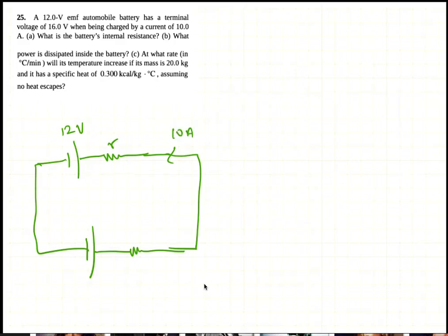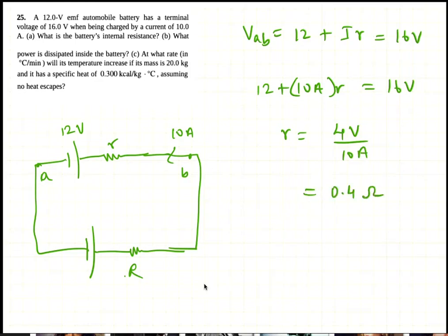They tell us the terminal voltage V_AB, which is 12 volts plus IR, equals 16 volts. So 12 plus 10 amps times R equals 16 volts. Therefore R is 16 minus 12, which is 4 volts, divided by 10 amps, equal to 0.4 ohms. So the internal resistance is 0.4 ohms.